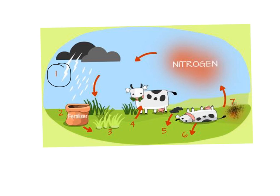Which brings us to step number two. At step number two, bacteria in the soil and in plant roots change the nitrogen from the air into a more usable form for plants. This is called nitrogen fixation.